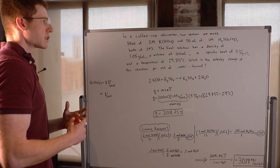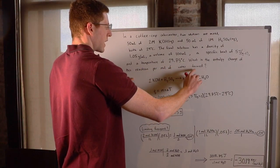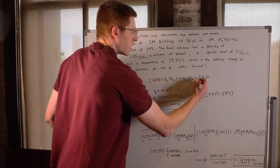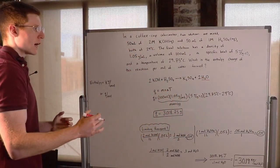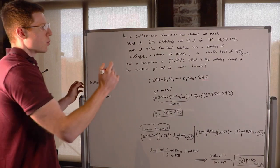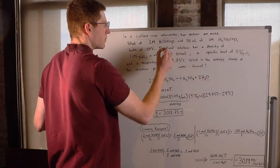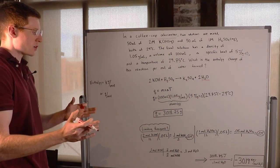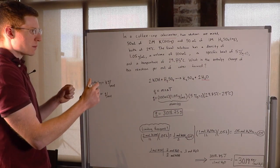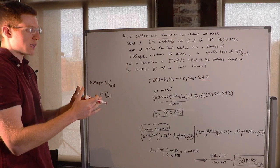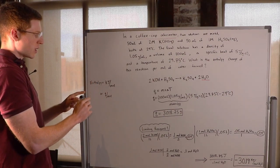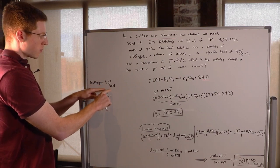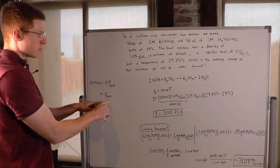They're asking for the enthalpy change of this reaction per mole of water formed — in other words, for every mole of water formed, how much heat is evolved? We know we're in a coffee cup calorimeter, which means this reaction is taking place at constant pressure. Enthalpy is simply the heat transfer at constant pressure, usually written in kilojoules per mole, or Q per mole.